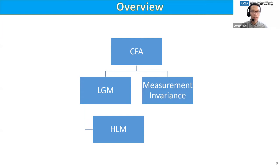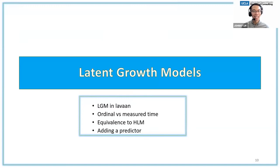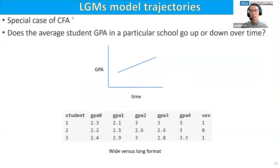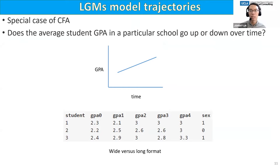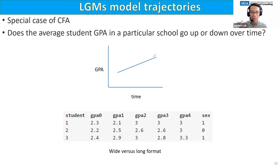Let's go straight into latent growth models. Latent growth models model trajectories or trends longitudinally — it's a special case of CFA. A key question you might ask is: does the average student GPA in a particular school go up or down over time? We're talking about linear trajectories here, though you can fit non-linear trajectories if you want. Visually, over time it looks like average GPA goes up, but it could also go down or be flat.